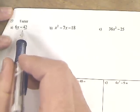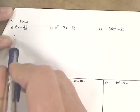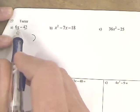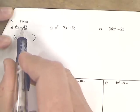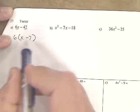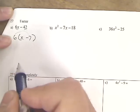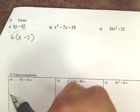They both have a 6 in it. I can divide each one by 6. So 6 times some number is 6x, 6 times some number is negative 42. So if I distribute it again, that's 6x and that's negative 42. So they're the exact same thing.